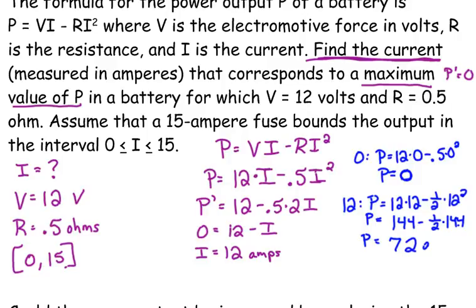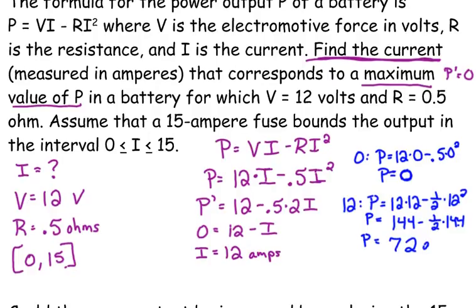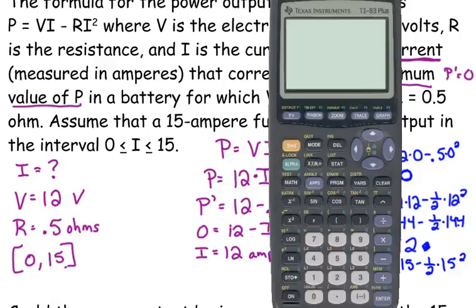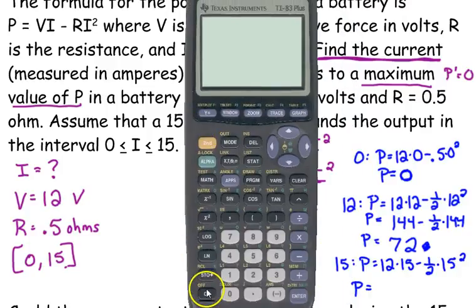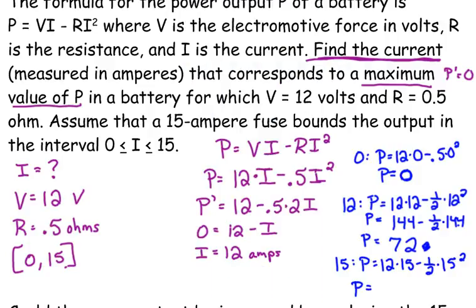What's power measured in? What is power measured in? No, it doesn't really tell us. Anyways. And then we need to check 15. So, 12 times 15 minus 1.5 times 15 squared. I'm not doing that one in my head. 12 times 15 minus 0.5 times 15 squared. 67.5.